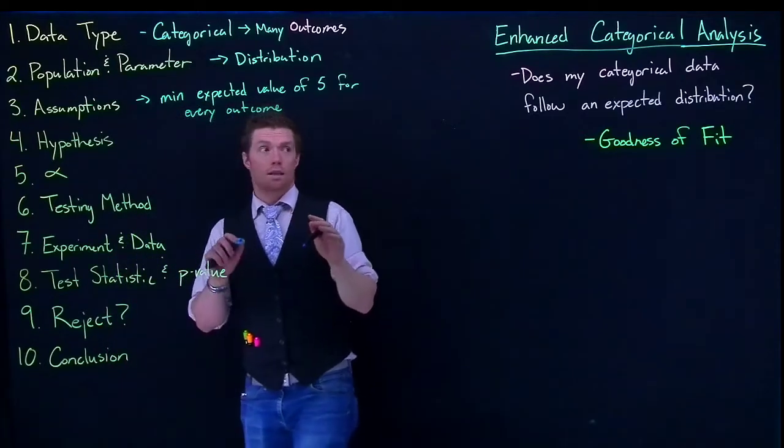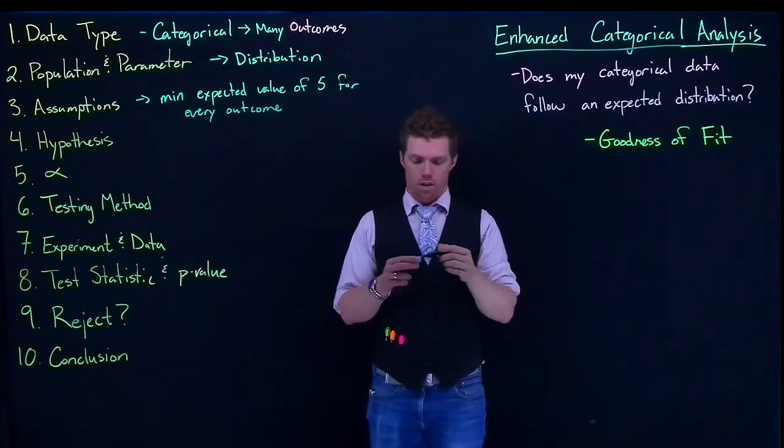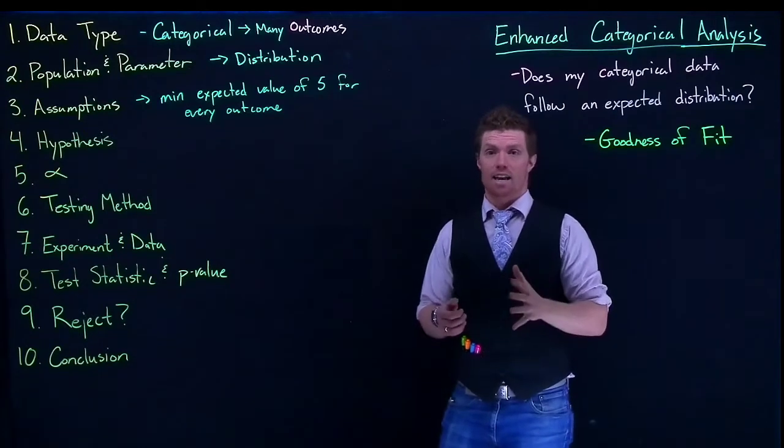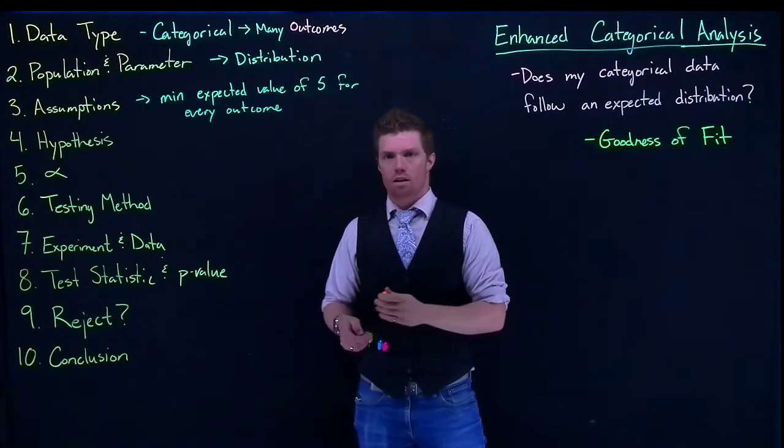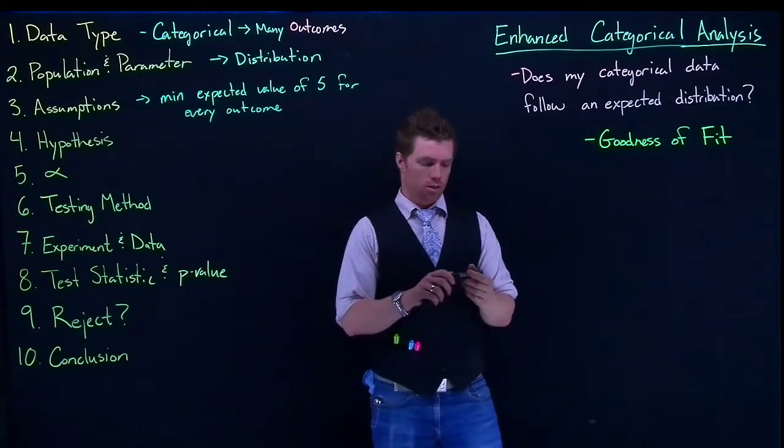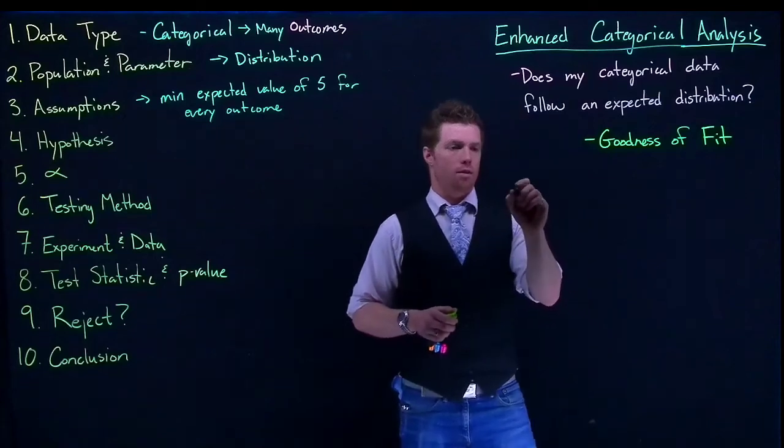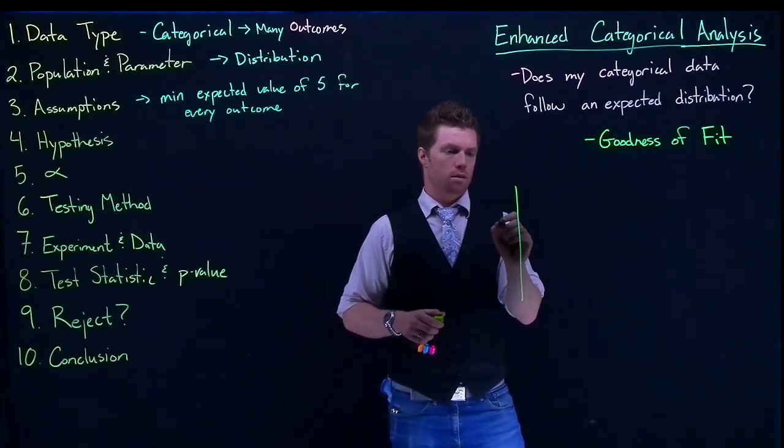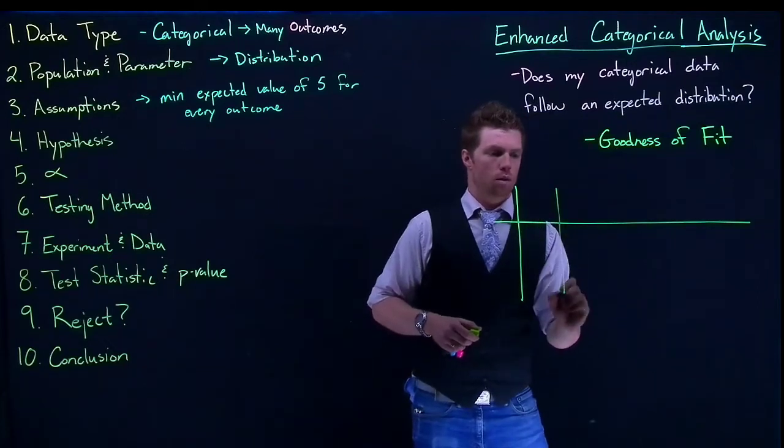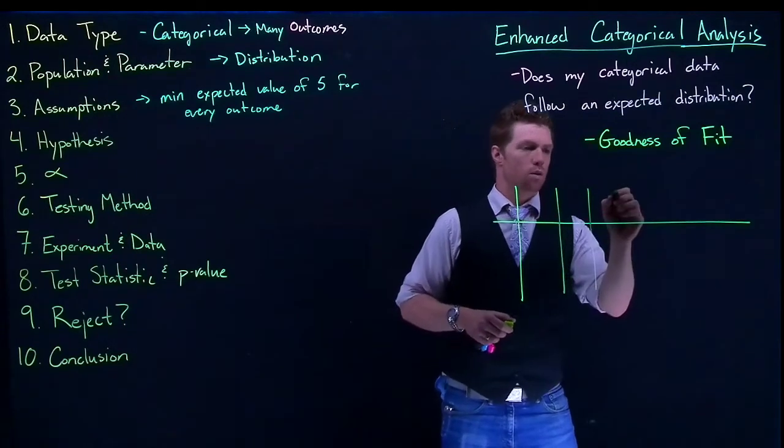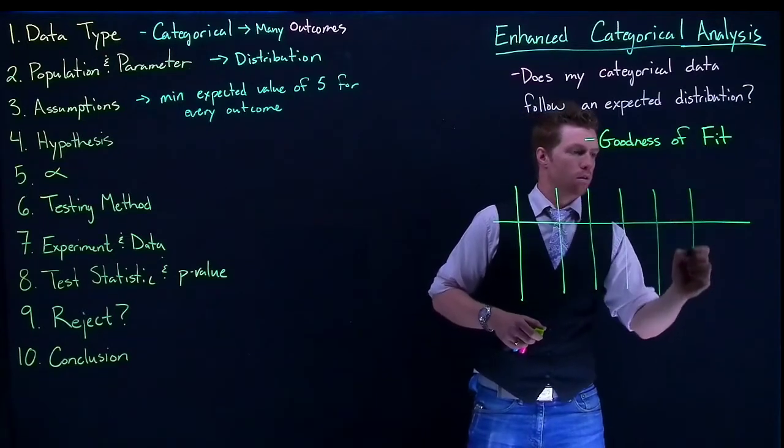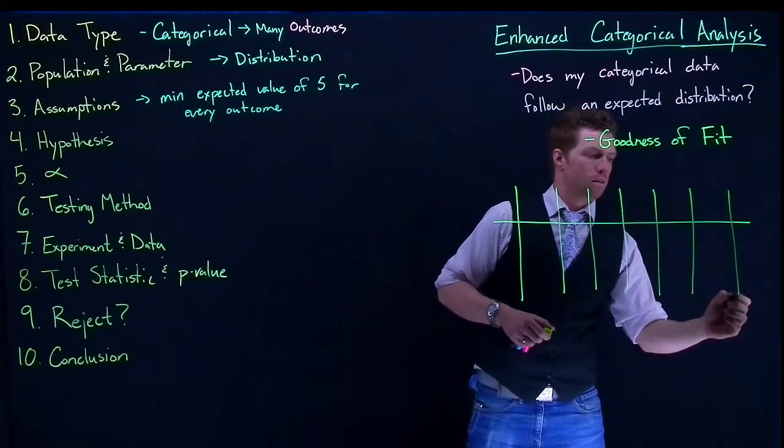All right, so let's do just a simple scenario. So let's suppose that I have a six-sided dice. And on this dice, I have six different colors. So let me get up just a little kind of graphic real quick. So we've got one, two, three, four, five, and six.